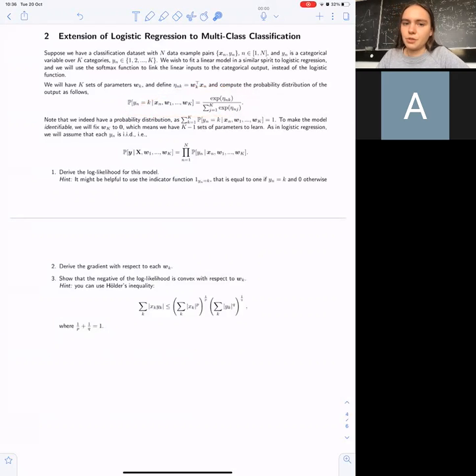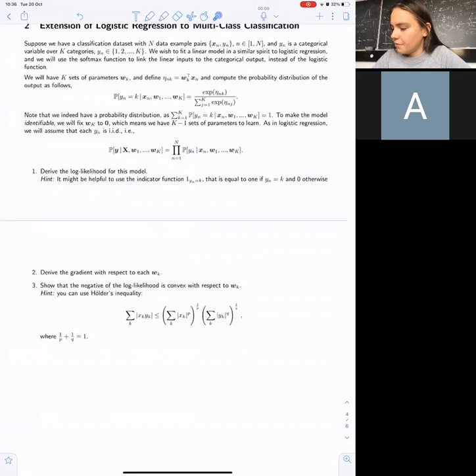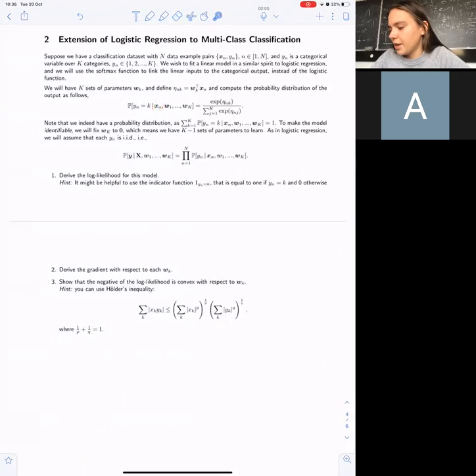This softmax function in the end gives you a probability distribution. So you have a fixed data point xn, and the probability of this data point to come from category k is given by this expression. On the top you have an exponent, and in the denominator you have a scaling factor. The scaling factor is the same for all the classes, so what changes with changing class is only the top part. Because this exponent is monotonic, whichever had the bigger initial scalar product has the bigger final probability.